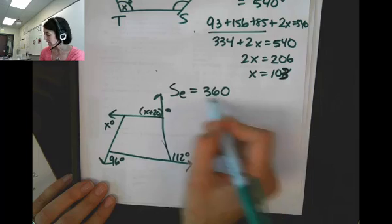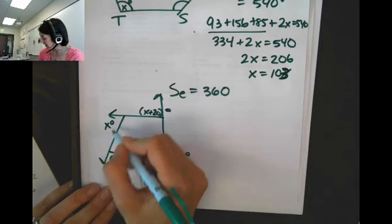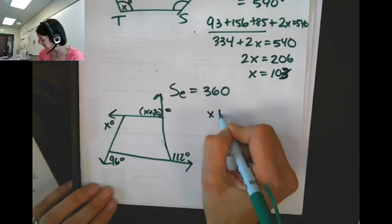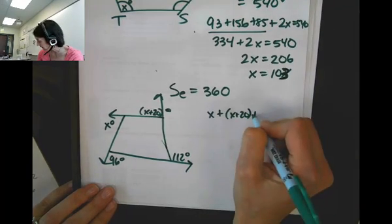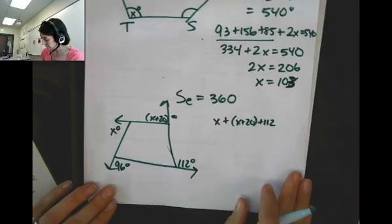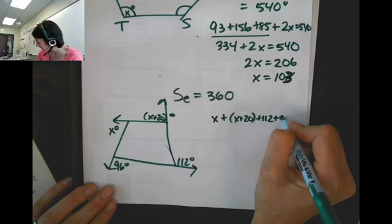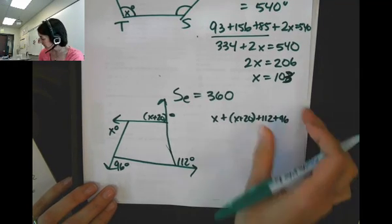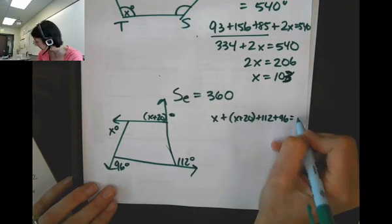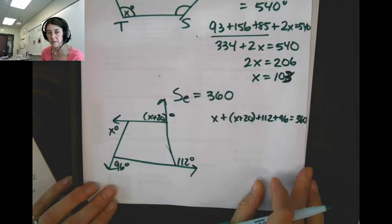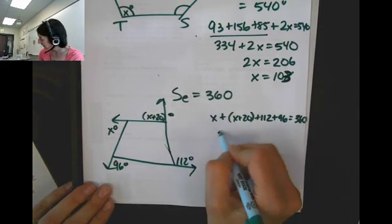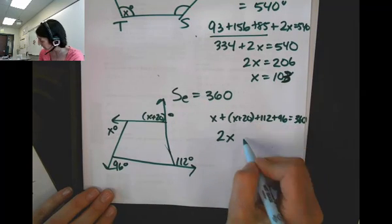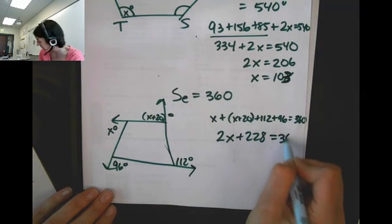So those exterior angles that are all in the same position should add up to 360. The sum of them is 360. So we're just going to set up an equation: x plus x plus 20 plus 112 plus 96 equals 360. And then that's it. Combine like terms and solve for x.